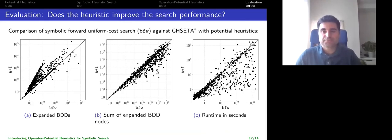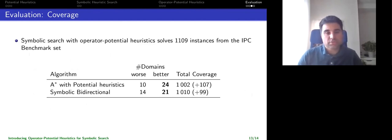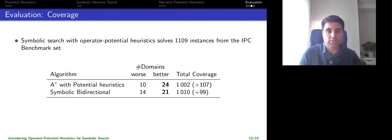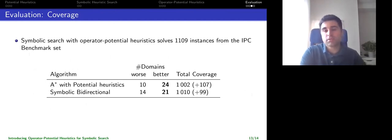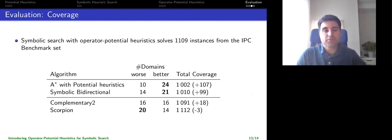This also translates into a coverage advantage — not only over symbolic forward search, but also over symbolic bidirectional search, and over A* with the same potential heuristics we gain a coverage advantage of more than 100 problems. Comparing against state-of-the-art planners such as Complementary2 or Scorpion, the performance of symbolic search with operator potential heuristics is very similar to those.